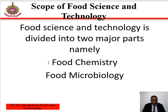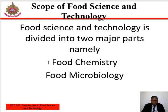Food chemistry involves the composition of the food, their properties, and how they react with each other in the environment. It also includes food analysis, which is divided into two: quantitative and qualitative analysis.